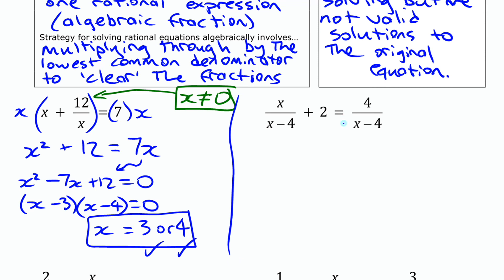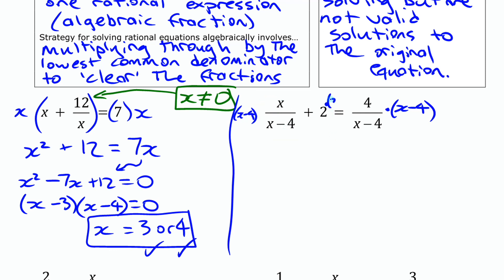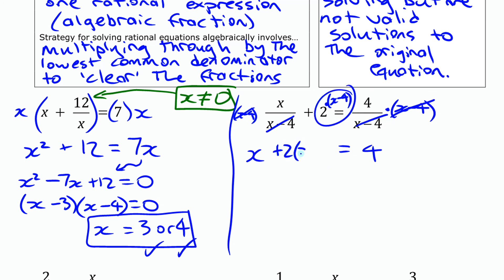For the second equation, we need to multiply through by x minus 4. Multiplying both sides by x minus 4, we can put x minus 4 beside each term. This first term simplifies easily because x minus 4 cancels with x minus 4 in the denominator, leaving just 4. The second term similarly cancels to leave just x. And the third term becomes plus 2 times x minus 4.